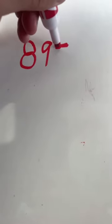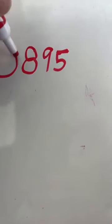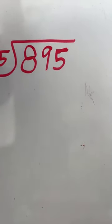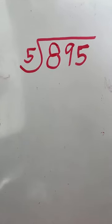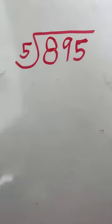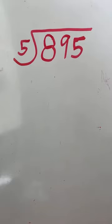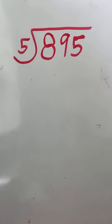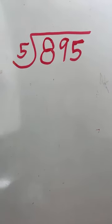All right, next example: 895 divided by 5. So we want to start out dividing by the smallest number possible. Again, the rule is the number inside the square has to be equal to or bigger than the number outside the square.